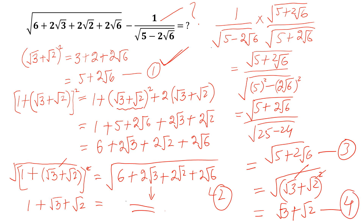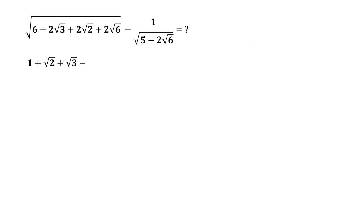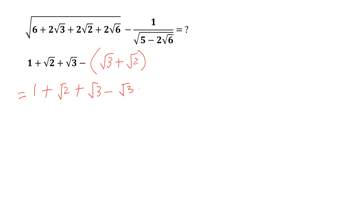So we plug in equation 2 and equation 4 into the original question, and we get minus (√3 + √2). Simplifying: 1 + √2 + √3 − √3 − √2. The √3 terms cancel and the √2 terms cancel, and we get 1.